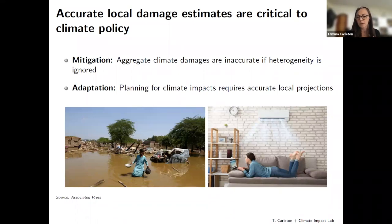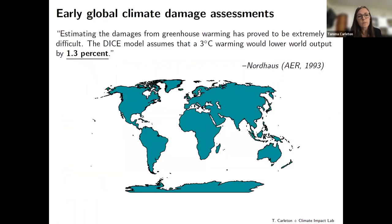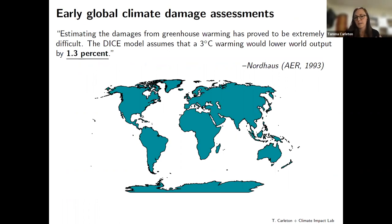First, we won't get aggregate climate damage estimates correct if we ignore that there are very differentiated effects across heterogeneous populations. Second, as we're building adaptation plans looking forward, we need accurate sector-specific estimates of what's going to happen on the ground in a given locality.